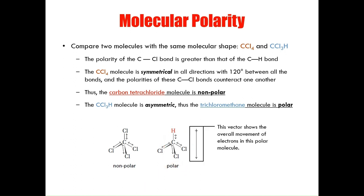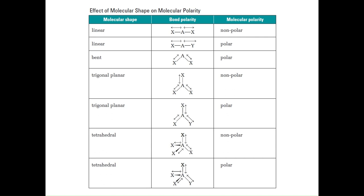This vector shows the overall movement of electrons for the entire molecule. For quick reference, I've included a table showing the polarity of the key molecular shapes discussed in this lecture. With this, I conclude this package — I hope you understood all the concepts discussed today. All the best, and I'll see you next time.